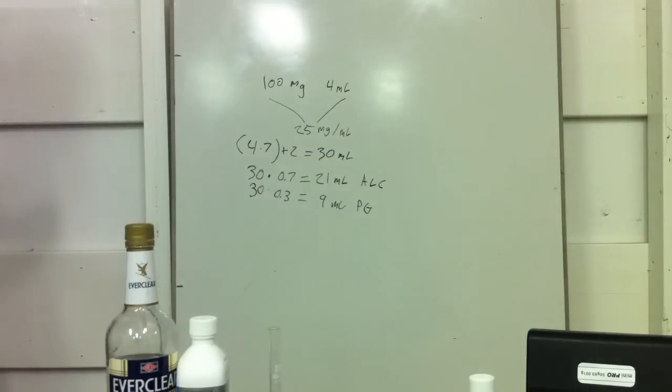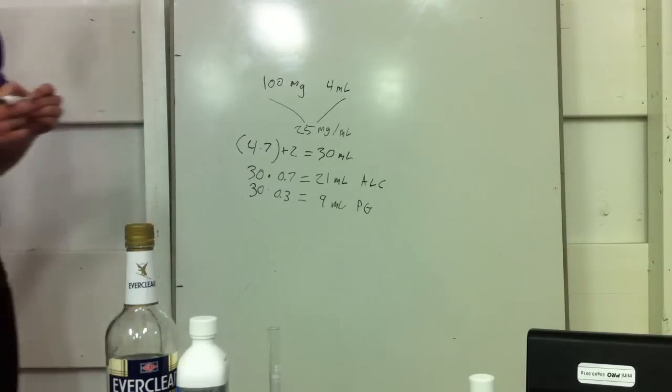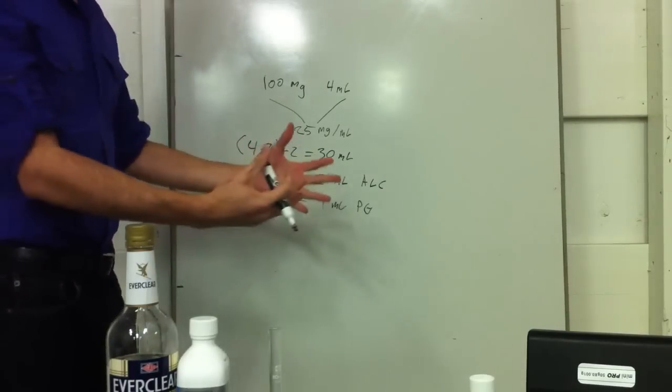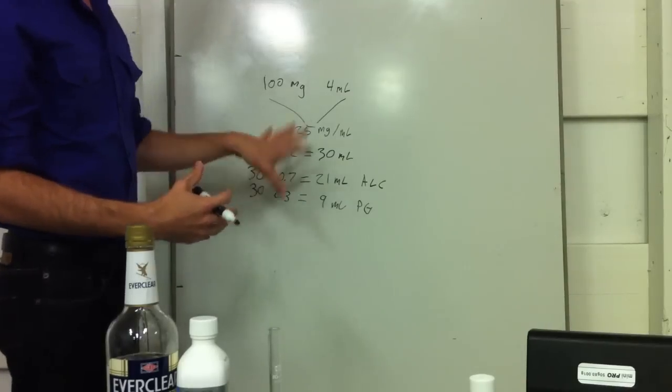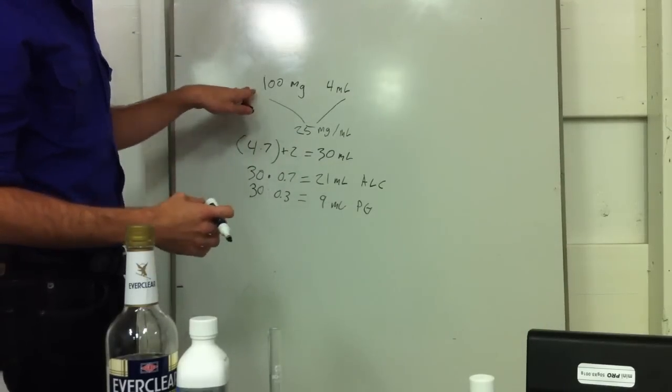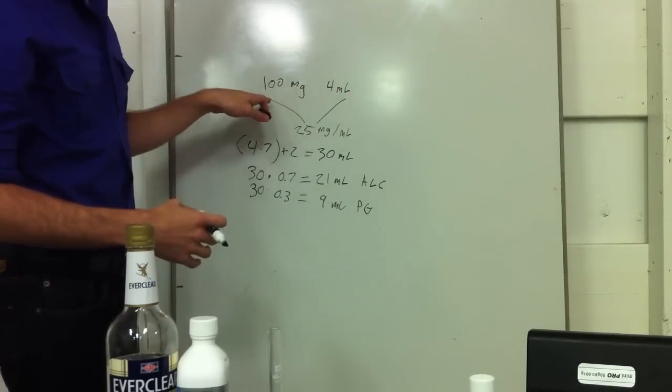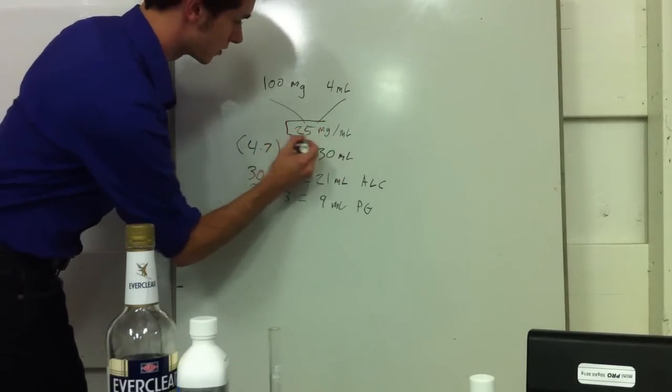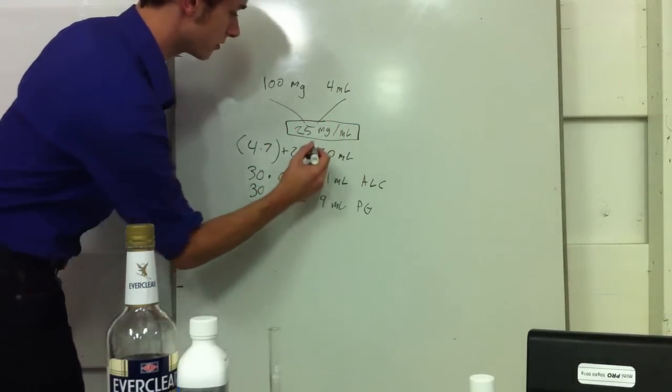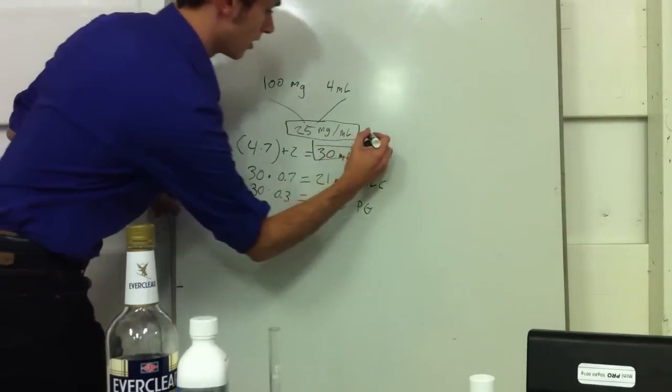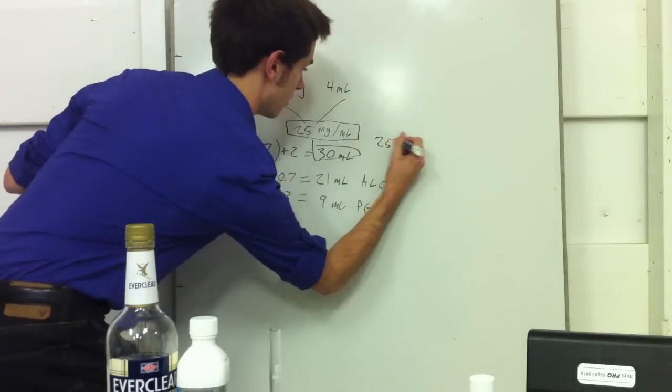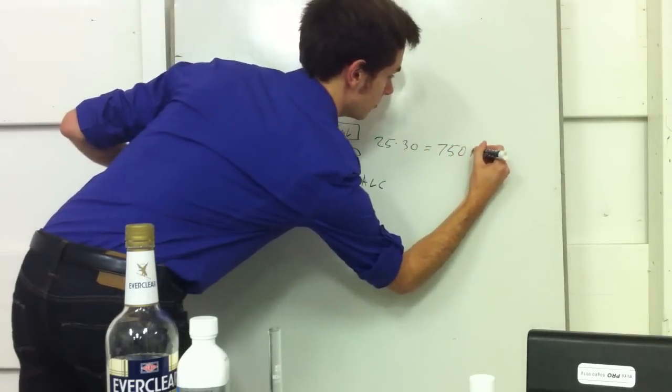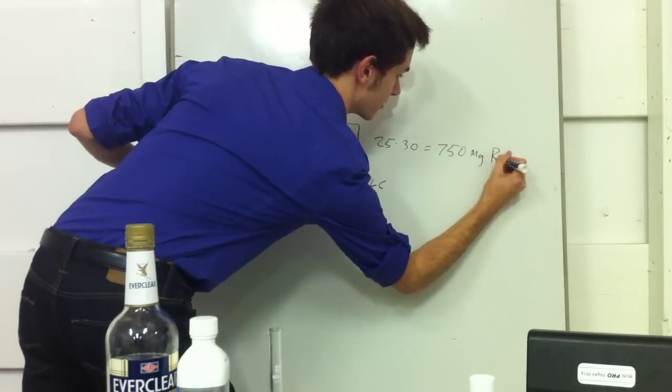So now we know how the solution is divvied up. Now the next step is to figure out how much of the RU5841 we actually have to weigh out to go into the solution. So basically at this point all you do is multiply 25 milligrams per milliliter times your total dose here. And 25 times 30 will give us 750 milligrams of RU.